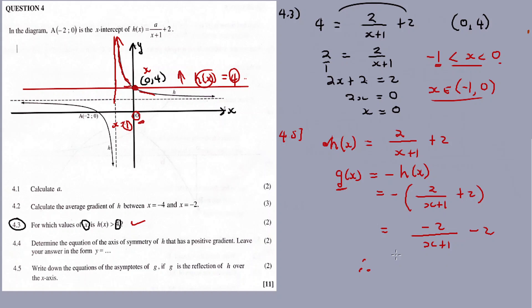Therefore the asymptotes for the reflected function are x equals minus one and y equals negative two.